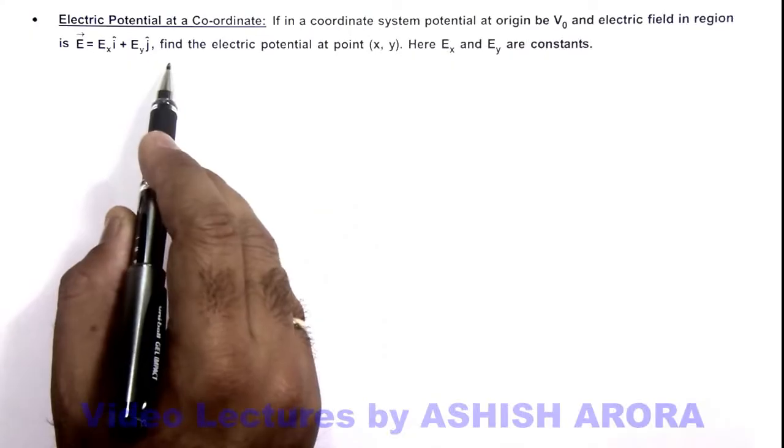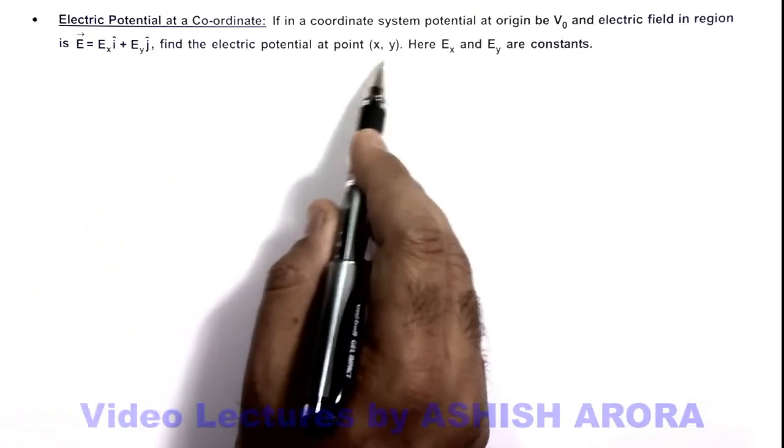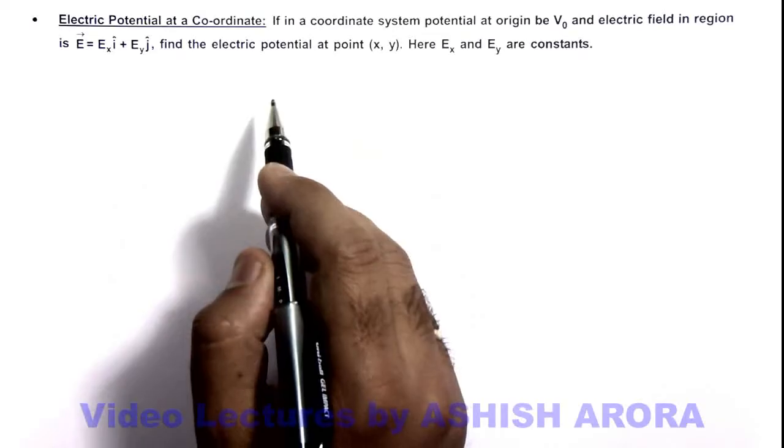We are required to find the electric potential at a general point (x, y), where Ex and Ey are considered to be constants.